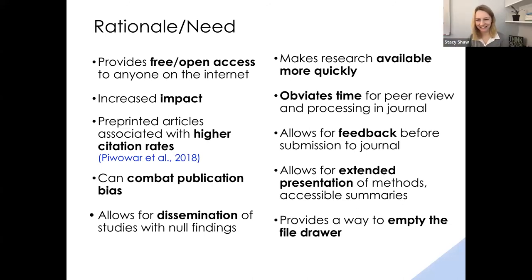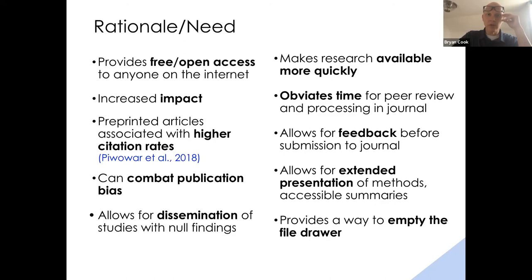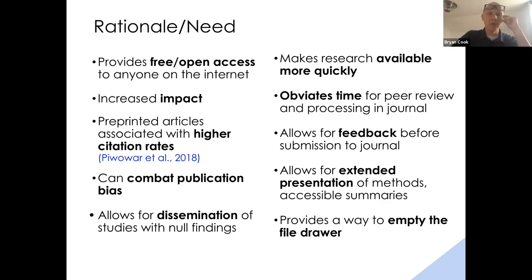There are lots of rationales for preprints that overlap significantly with rationales for open access. We want to make our work freely accessible and democratize access to research. There is research showing that making your work open access — particularly green access — increases impact. It only stands to reason: you're making it available to a broader range of research consumers, extending the impact especially to non-researchers who are less likely to have institutional affiliations. That increased impact is reflected in documented higher citation rates for preprints.